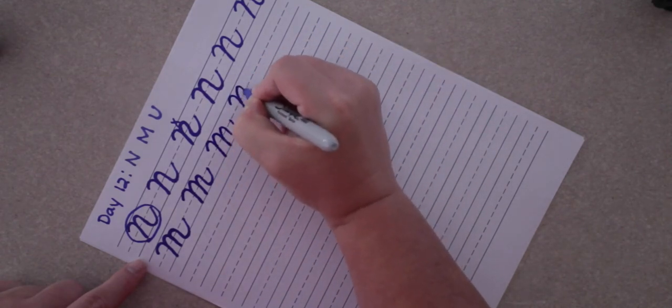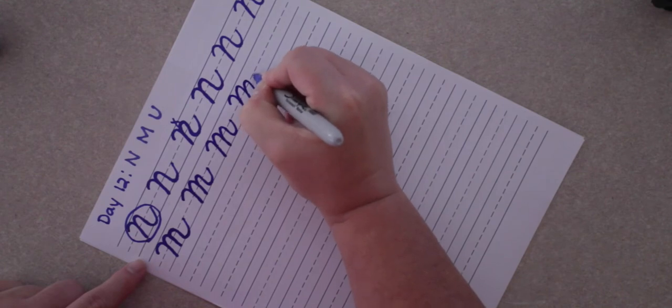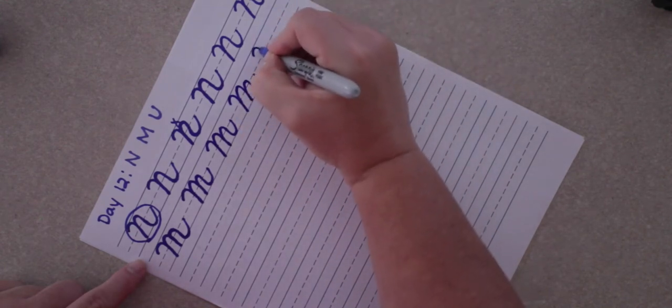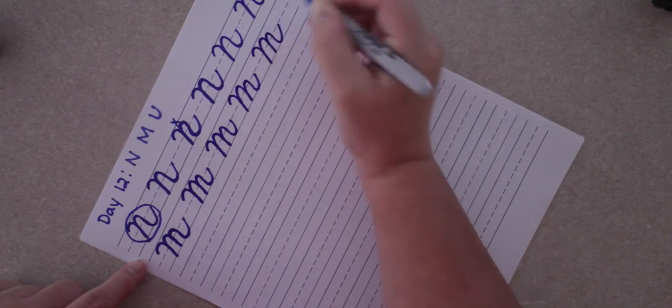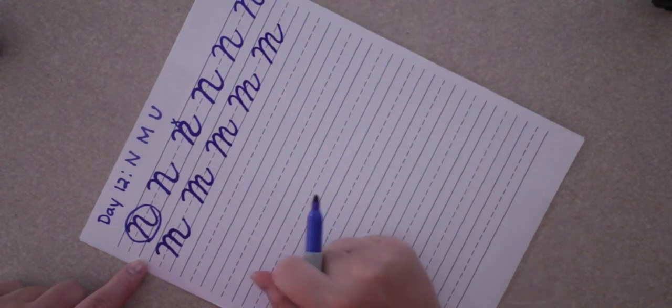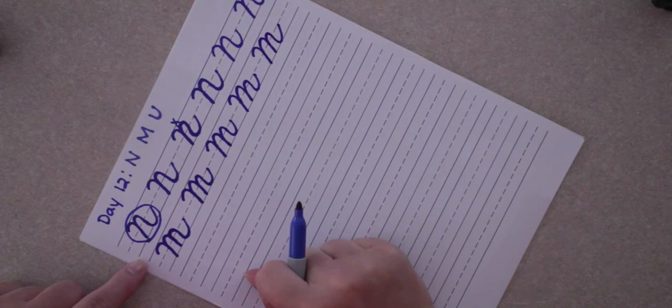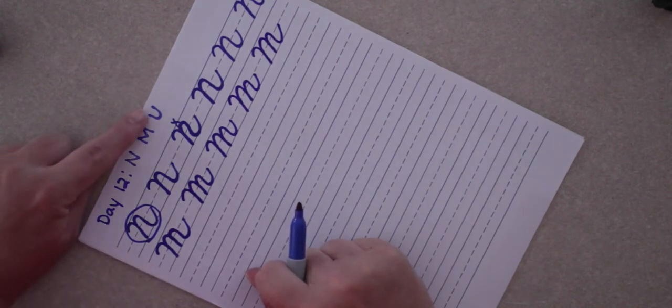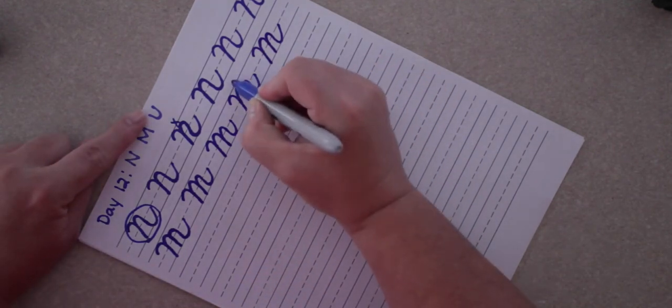When you're ready, you can pause the video and make a line of capital M. Just be really careful that you don't get that second heel too low. Then go back and circle which one you like the best.